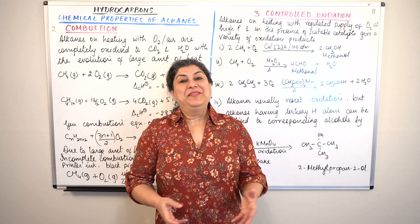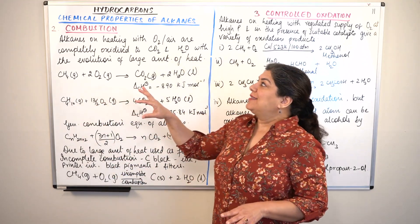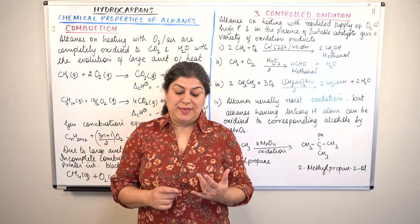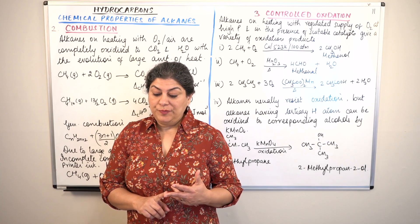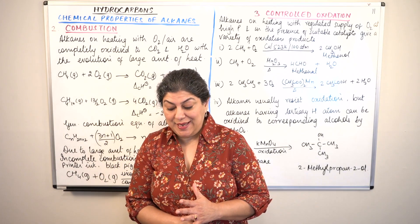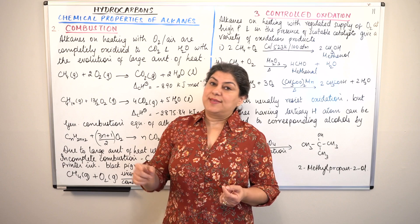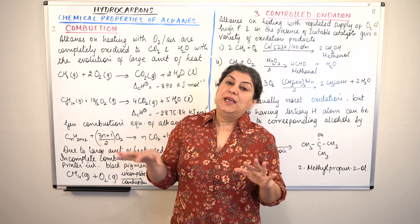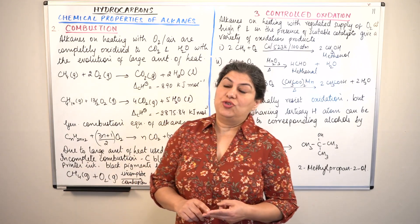Hello, I'm Seema and welcome to part 11 of the chapter hydrocarbons. In the previous video we started discussing the chemical properties of alkanes and I told you that there are seven properties that we will be studying: substitution, combustion, controlled oxidation, isomerization, aromatization, reactions with steam, and pyrolysis. We studied substitution — halogenation, nitration, and sulfonation. In this video we'll be doing the next two properties: combustion and controlled oxidation.